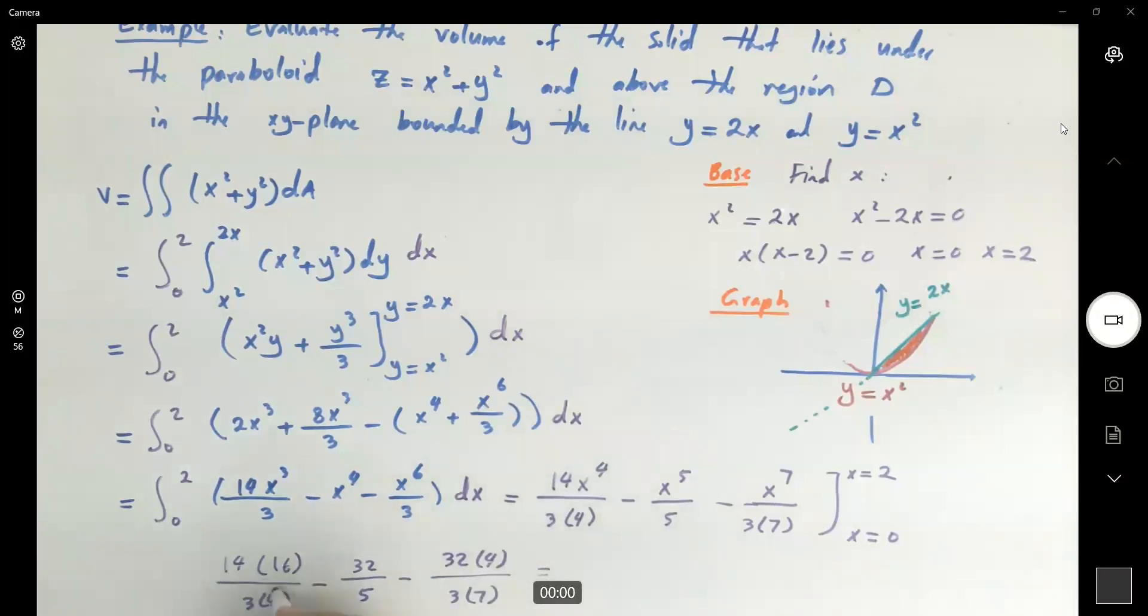Simplify this guy. 56 over 3 minus 32 over 5, and here what we can simplify.